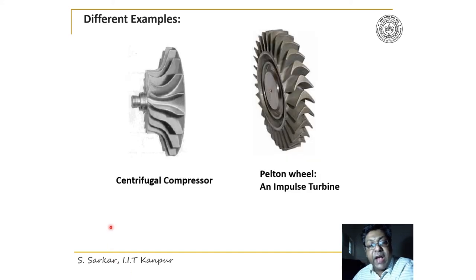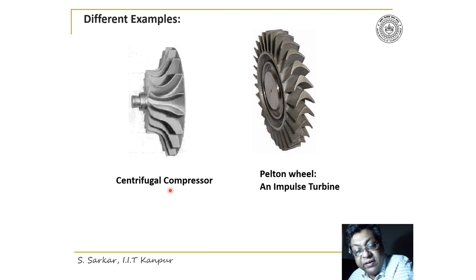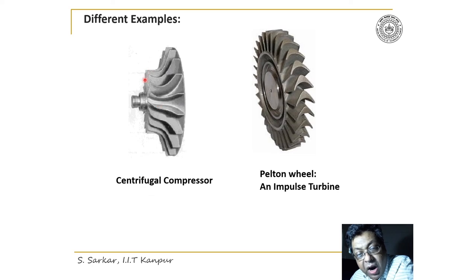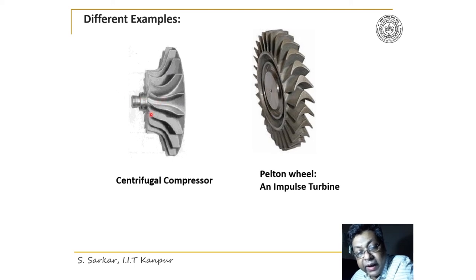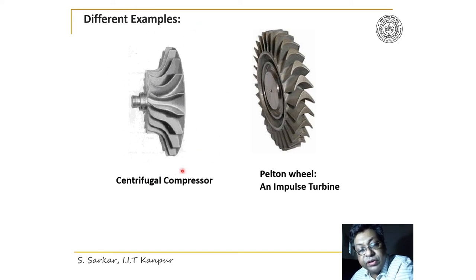Let's take another example, which is the impeller for a centrifugal compressor. The construction is completely different. The frontal part is called the eye of the impeller, and the air is sucked in axially and then thrown out radially. The construction of the centrifugal impeller is completely different from the axial compressor blades.